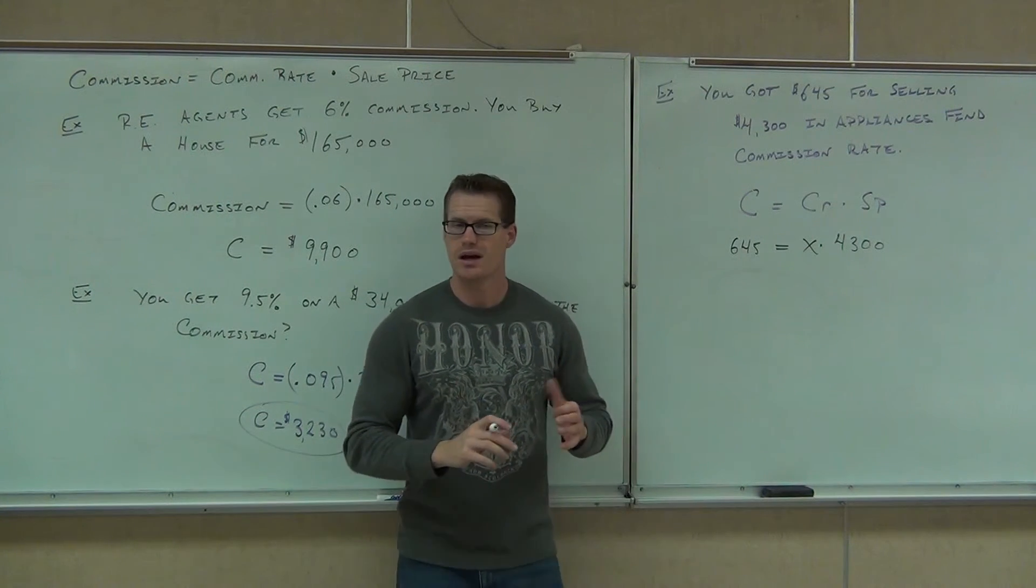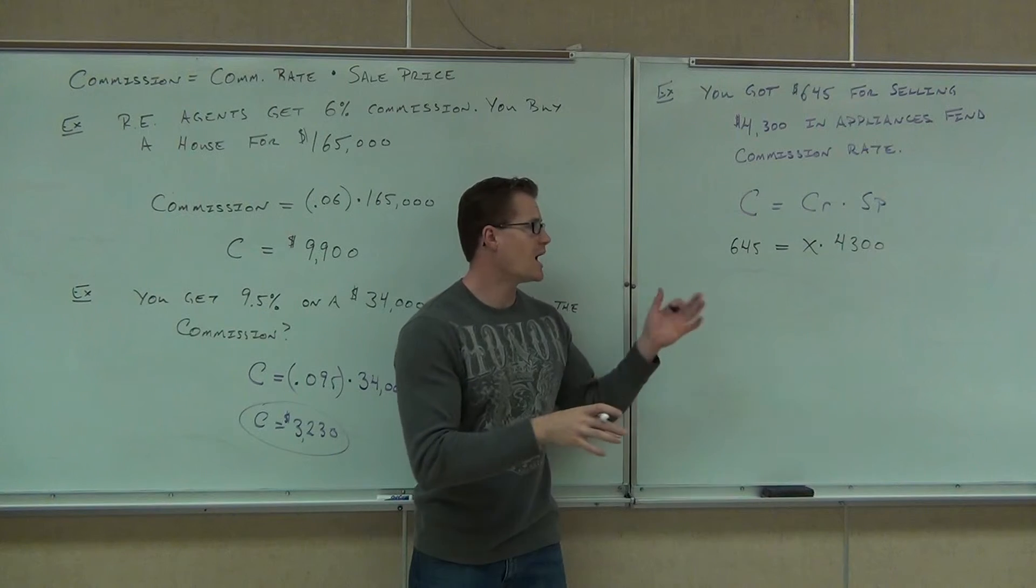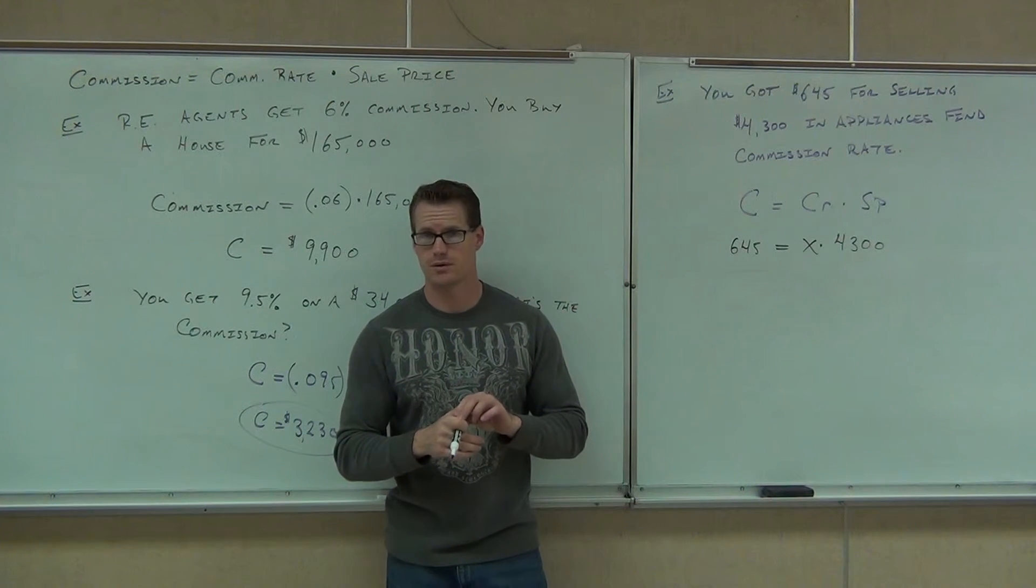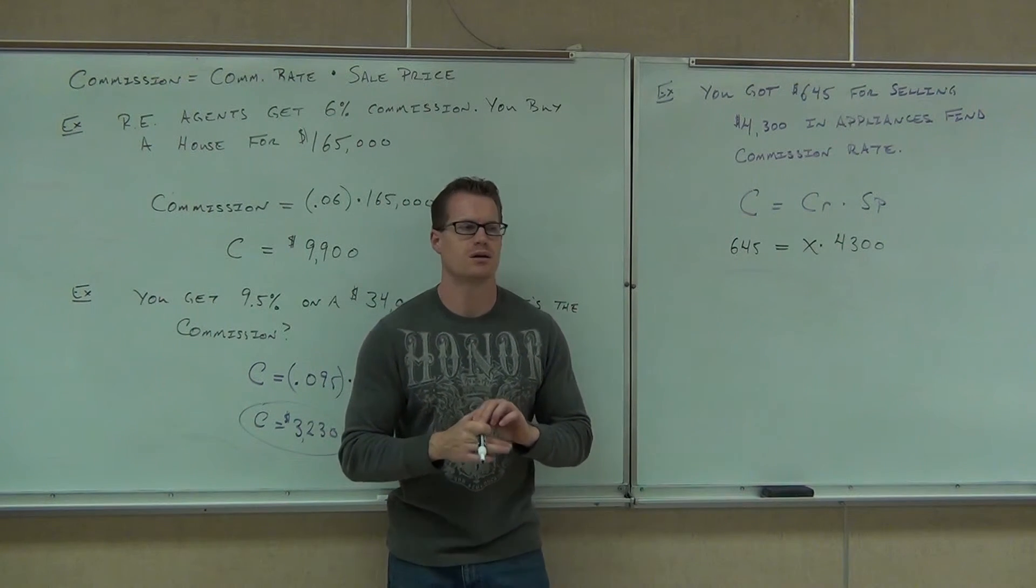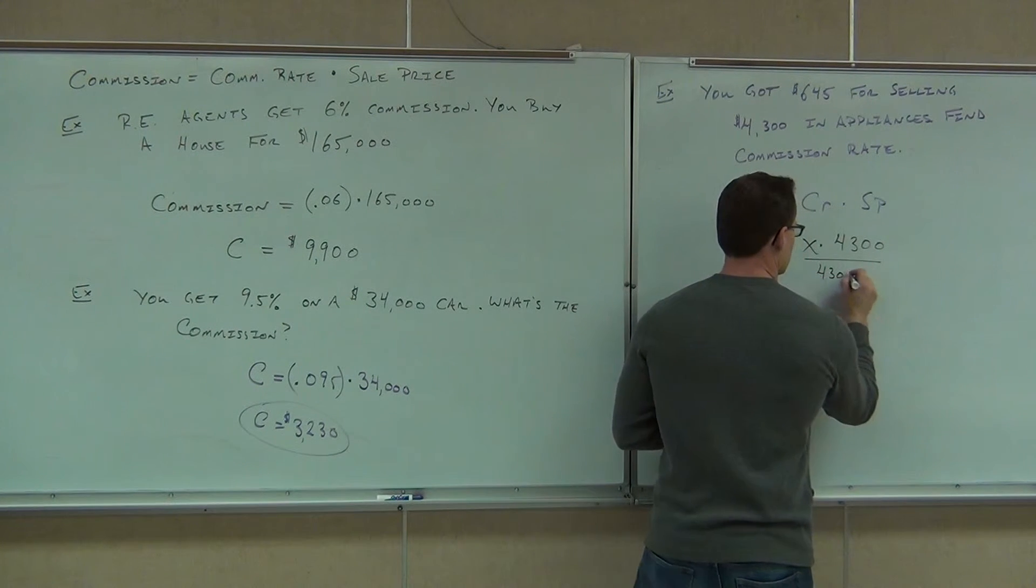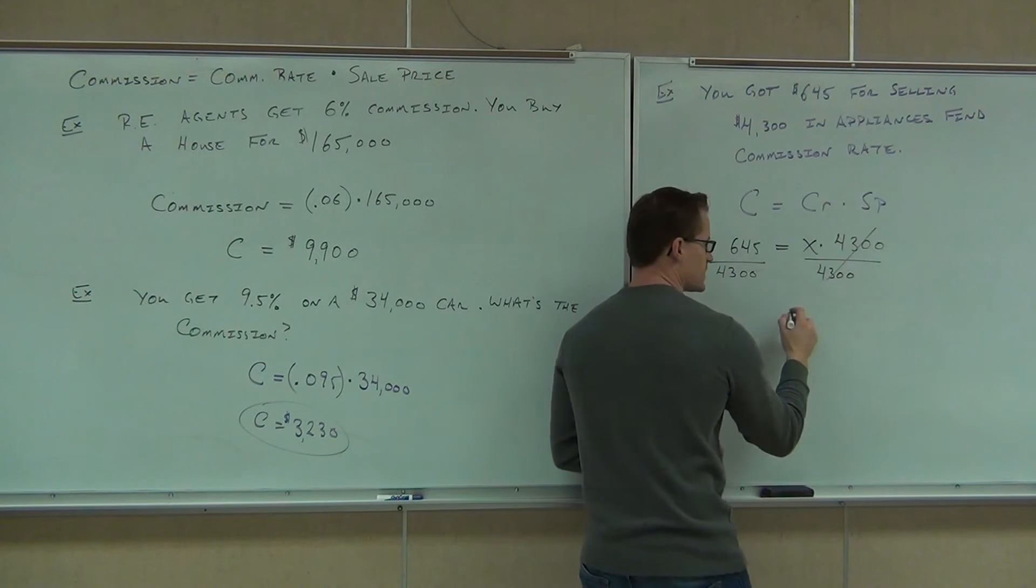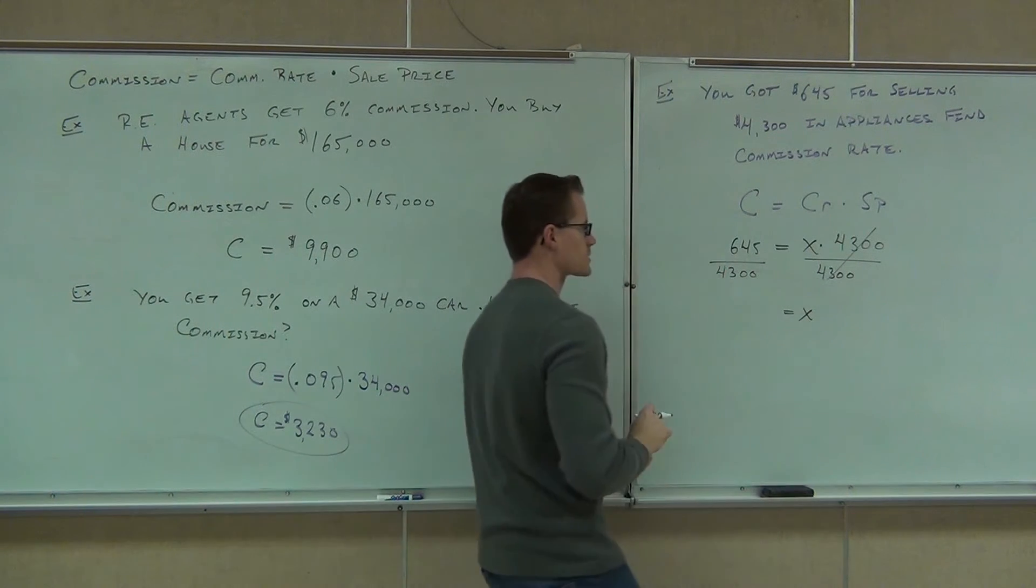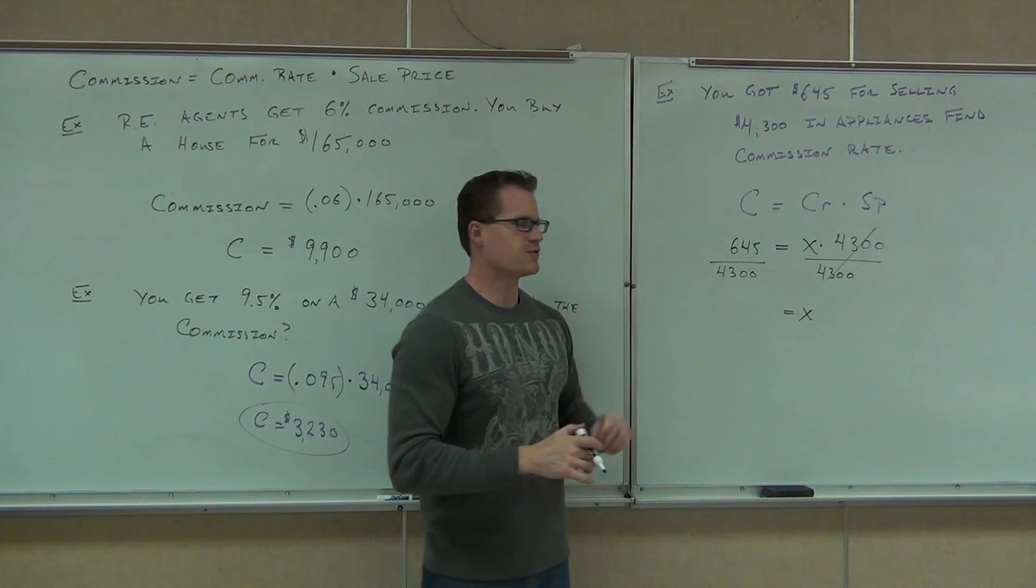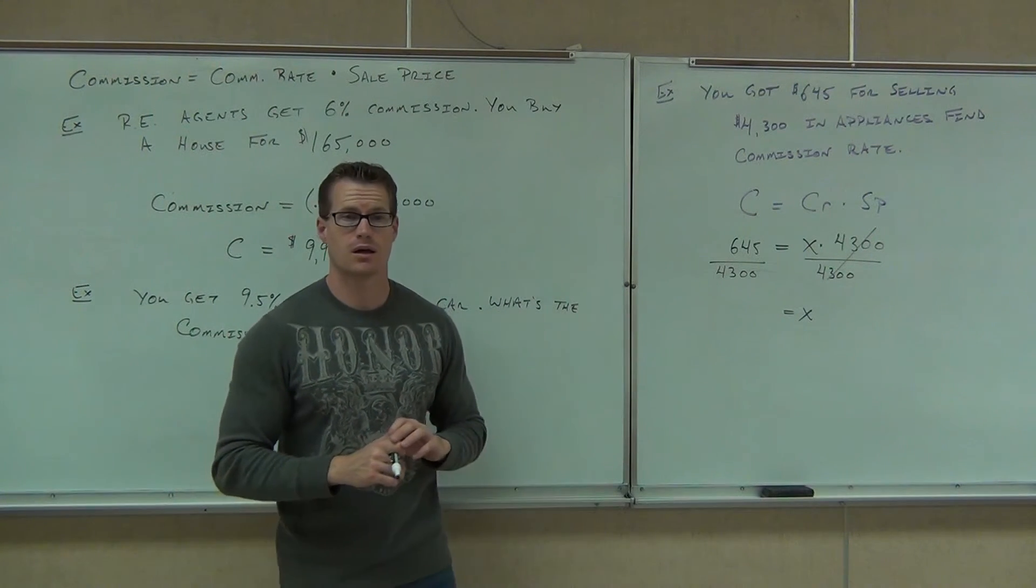Does that look familiar to you? Yeah. It's the same idea. Same idea as a sales tax. Only now we're looking for commission rate. How do you get rid of what you need to get rid of? Divide. Divide by what? $4,300. So show your work on these problems. We are doing basic algebra here. We got X on the right where we take $645 divided by $4,300. And you're going to get how much out of that? 0.15.